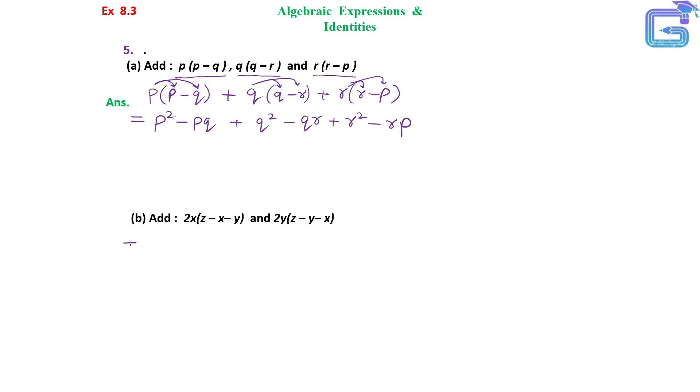In part B, we will do the same thing. We will multiply 2x with the trinomial and 2y with the trinomial, then find the like terms and add them up.